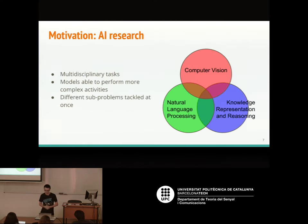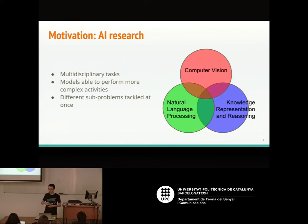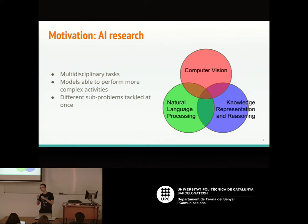In terms of artificial intelligence, the past few years have seen an explosion in the number of papers regarding this multidisciplinary task, joining computer vision, natural language processing, and knowledge representation and reasoning — which is the case of visual question answering. This is due to the fact that models joining these fields can perform much more complex tasks than what you can achieve using only computer vision or natural language processing alone.